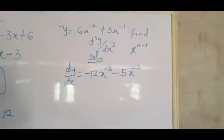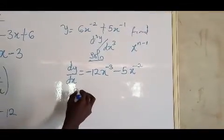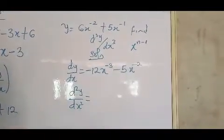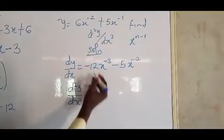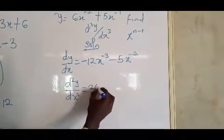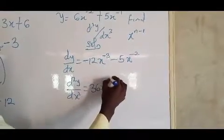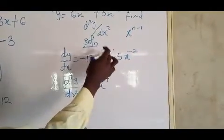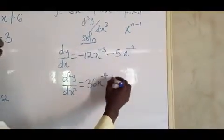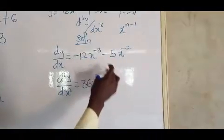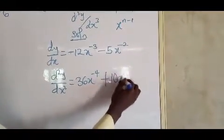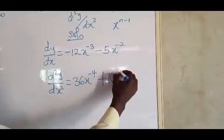Now for d²y/dx²: differentiating −12x⁻³ gives minus 3 times minus 12 = plus 36x⁻⁴, because minus 3 minus 1 = minus 4. Differentiating −5x⁻² gives minus times minus = plus, and 2 times 5 = 10, so we get plus 10x⁻³, because minus 2 minus 1 = minus 3.